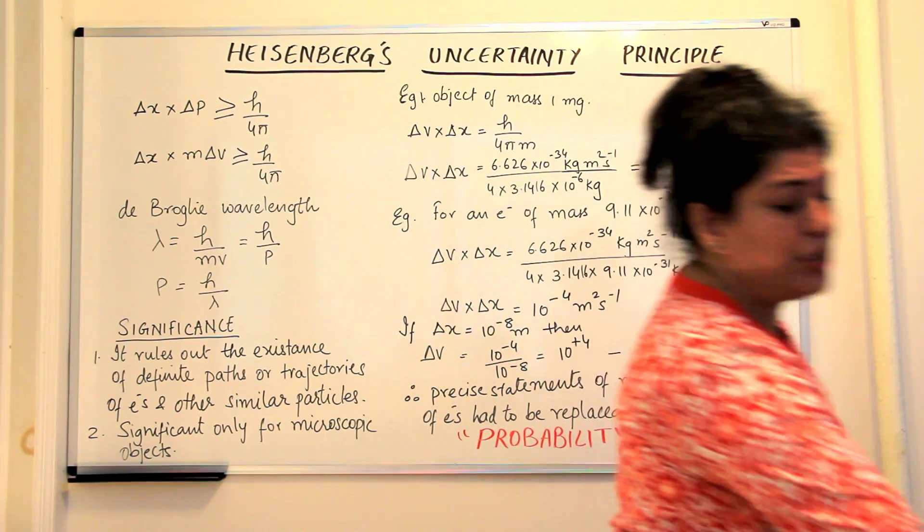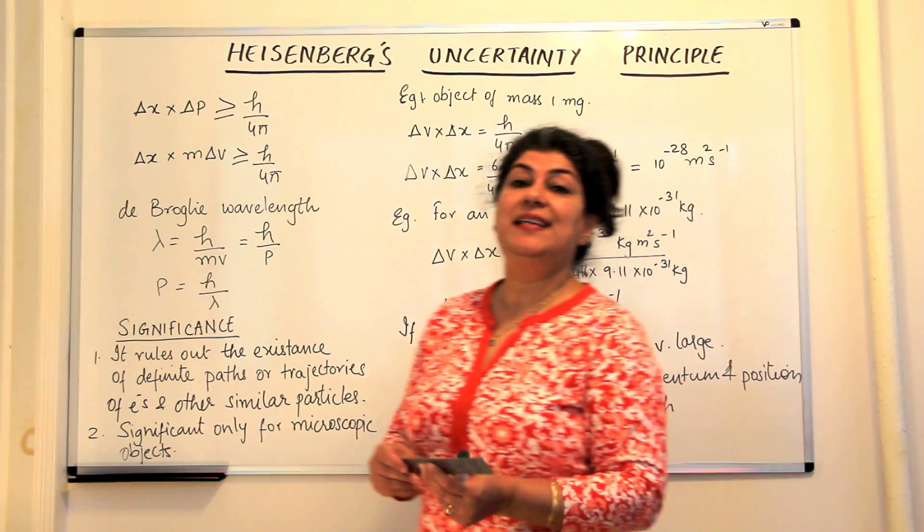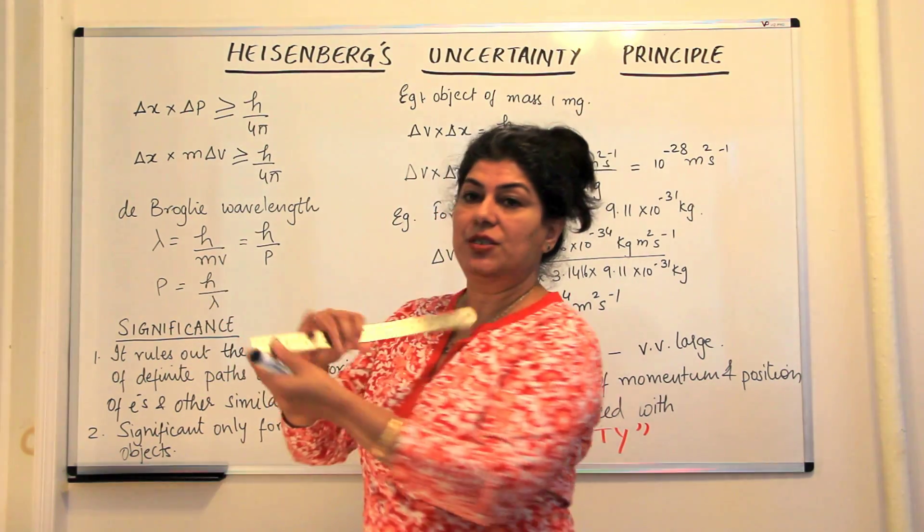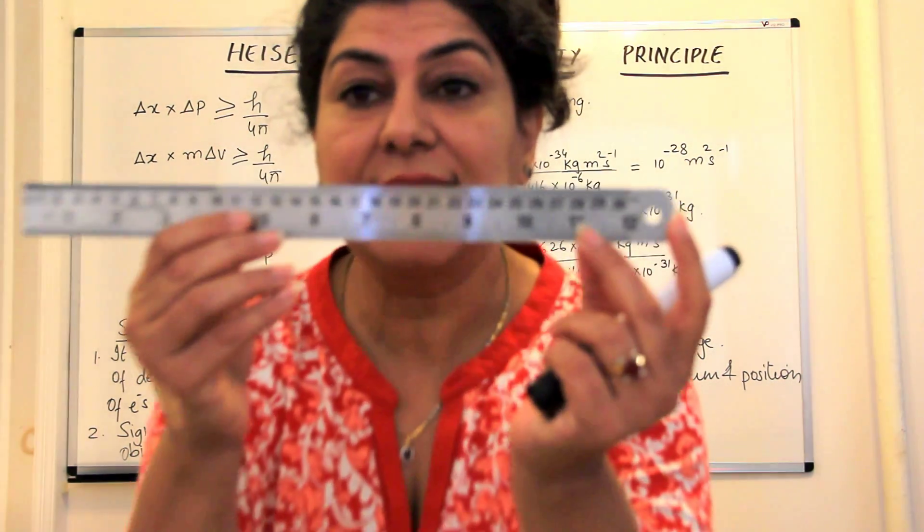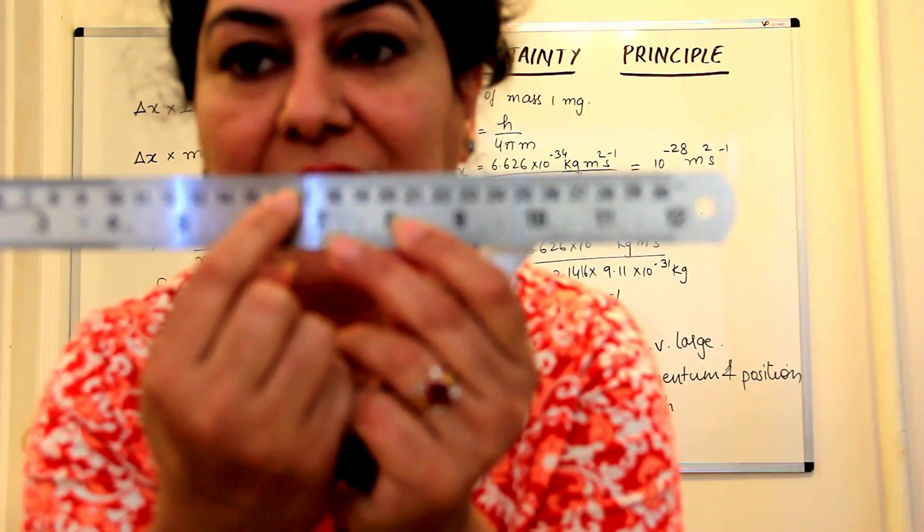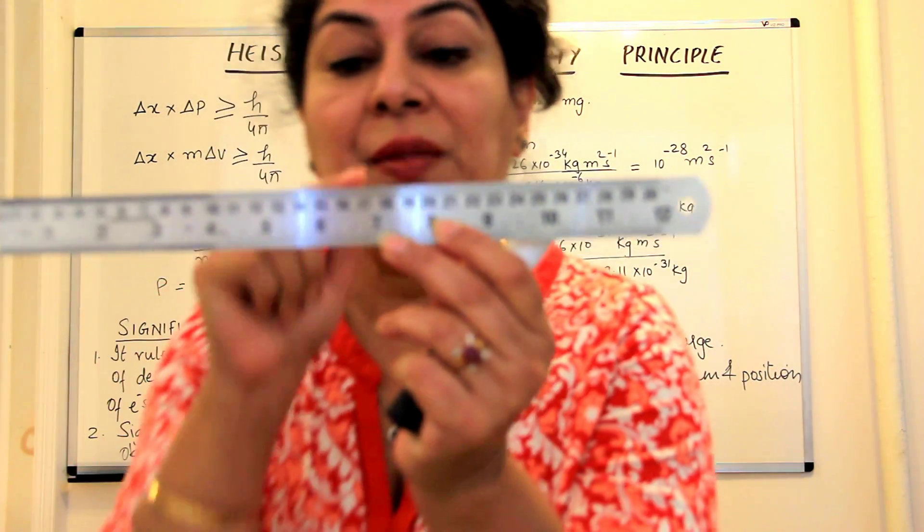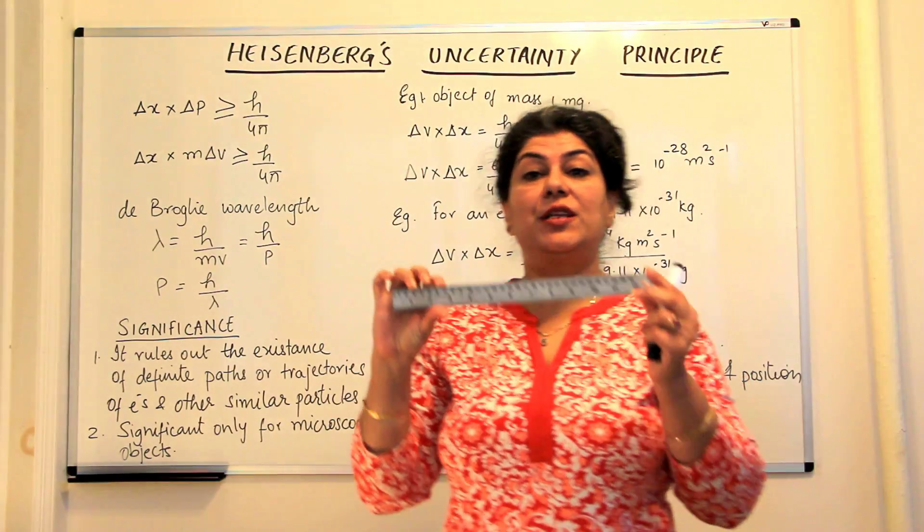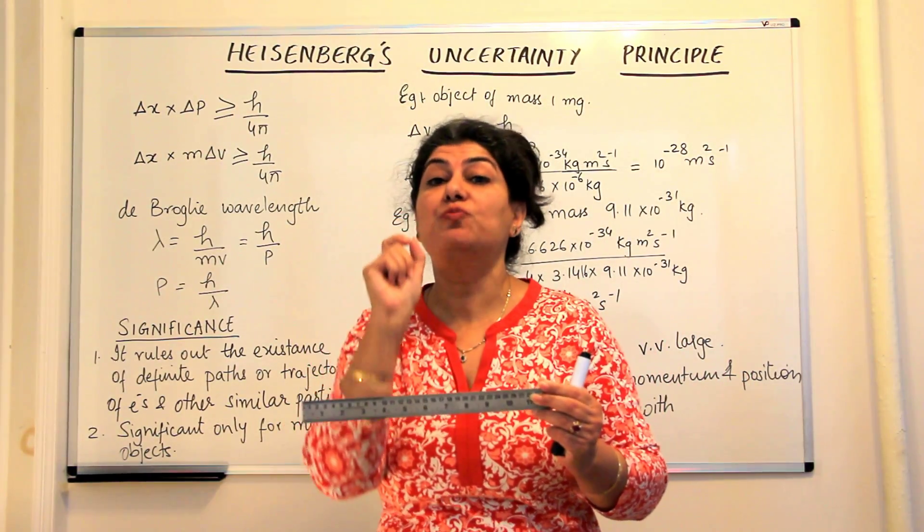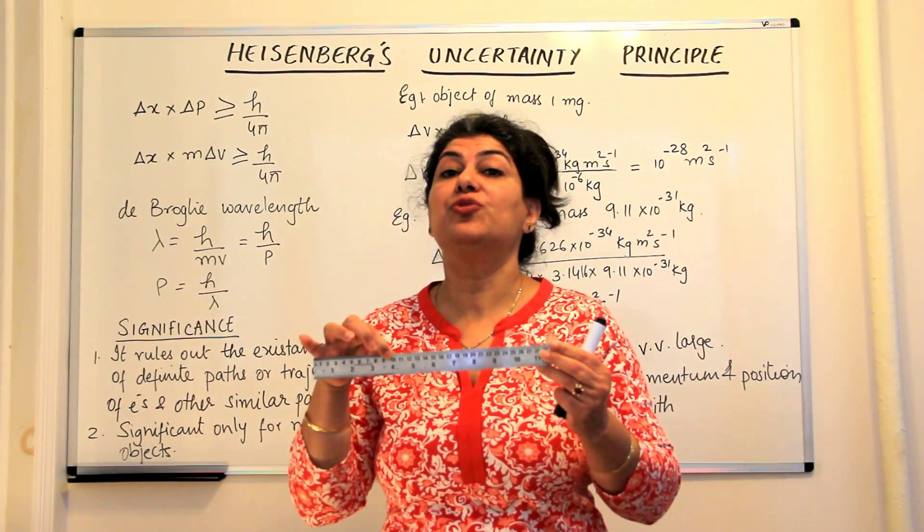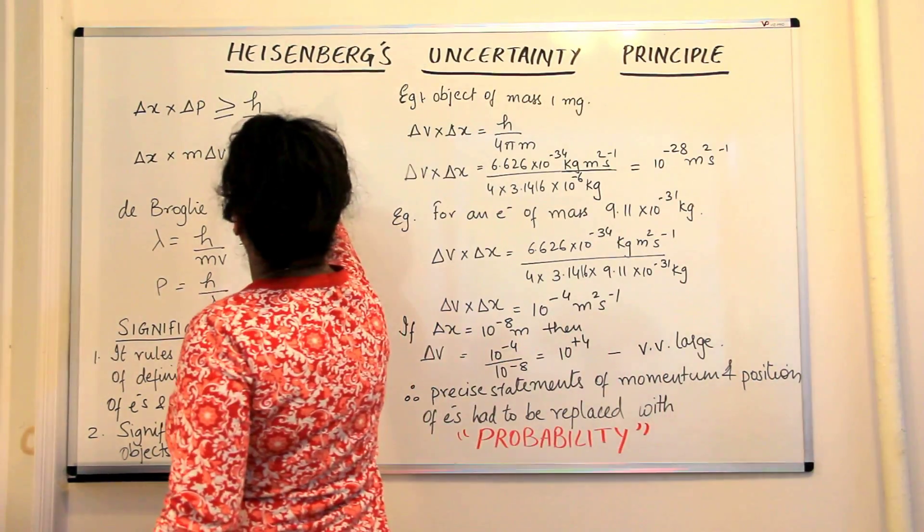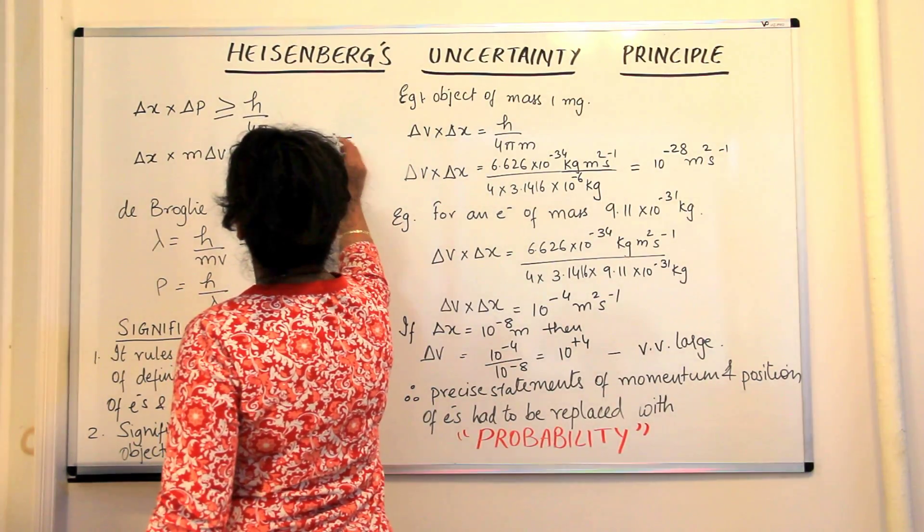Now, if I have to measure something in centimeters, if you notice the scale has calibration. If I am measuring in centimeters, it will have calibration in millimeters. That is, the measurement that you make, your scale should always have a unit smaller than the one that you want to measure.